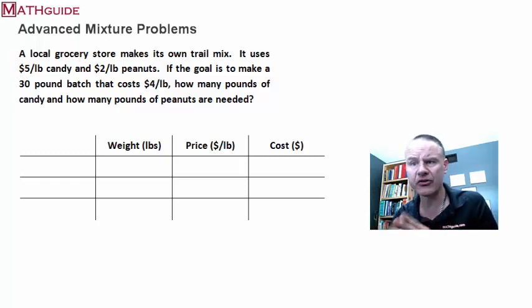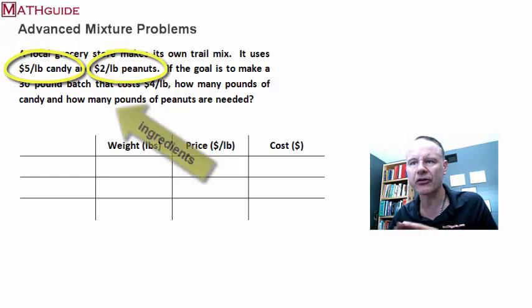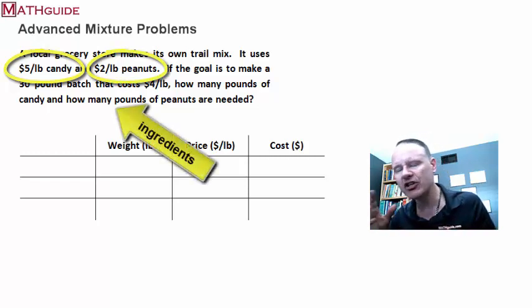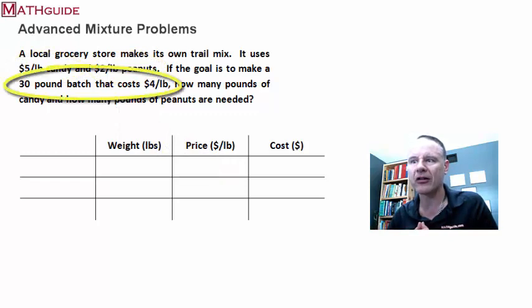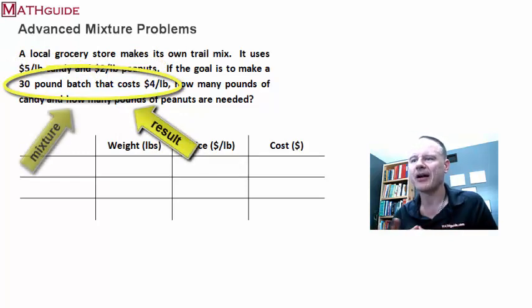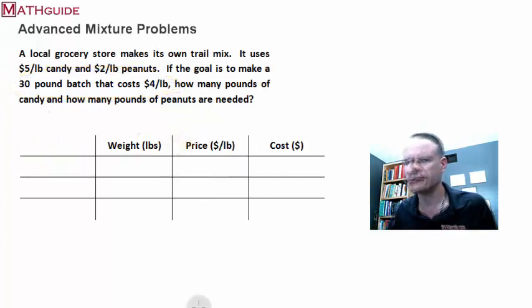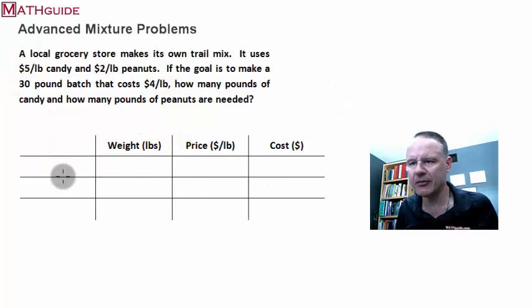All right, so what are they using? They're using $5 per pound candy, and they're using $2 per pound peanuts. So using expensive candy and cheap peanuts, and they're going to put that together to make this $4 per pound mix. All right, so let's talk about how to now fill the table and deal with this information. Since there's candy and peanuts, I'm going to place that into the table.